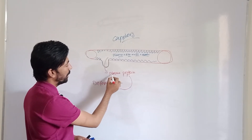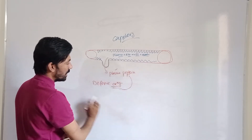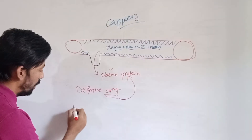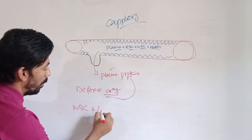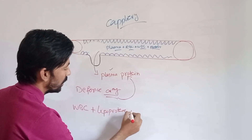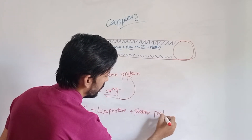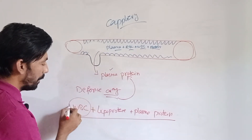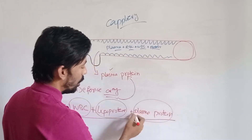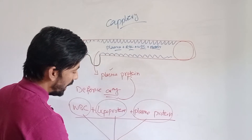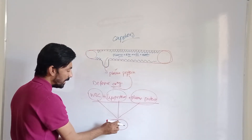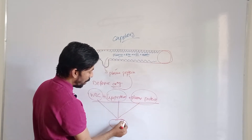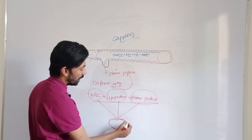Our defense mechanism — the white blood cells — will fight with the plasma proteins. The white blood cells consider the plasma proteins as foreign invaders, like terrorists entering the sensory retina. So the fight starts at that retinal patch between white blood cells, lipoproteins, and plasma proteins. Some white blood cells will die, some lipoprotein will die, some plasma protein will die, and all their dead bodies will accumulate and deposit at the sensory retina.